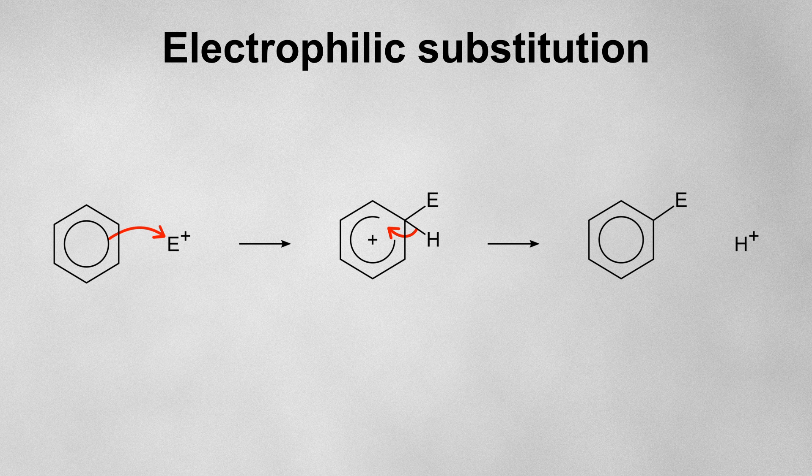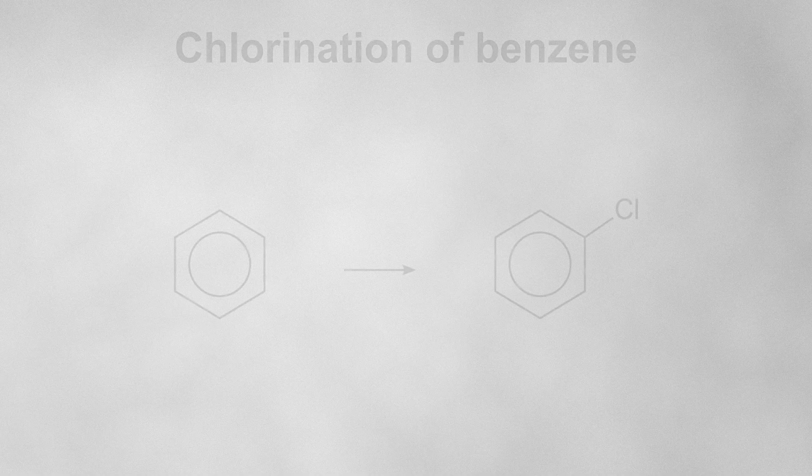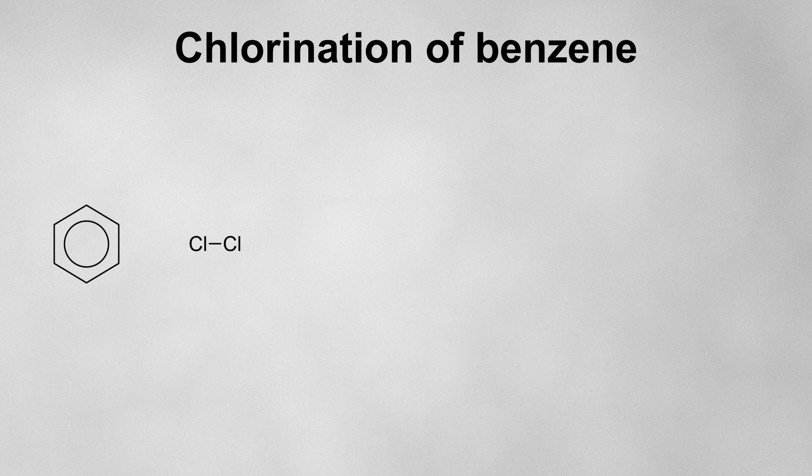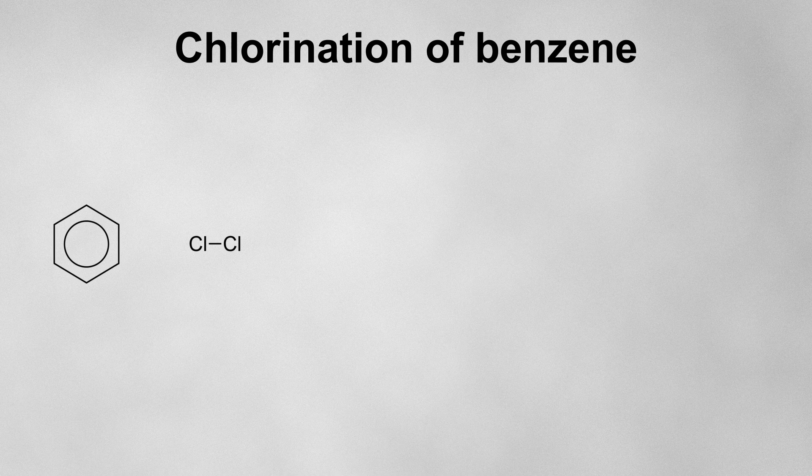Let's take a look at some examples of this mechanism in action. We'll start with the chlorination of benzene. If we try to react benzene and chlorine, not very much would happen. This is because benzene is not very reactive.